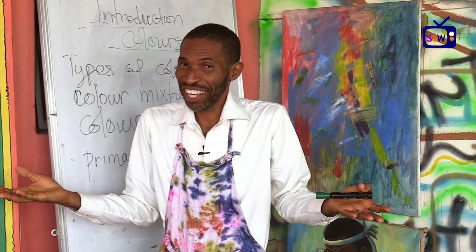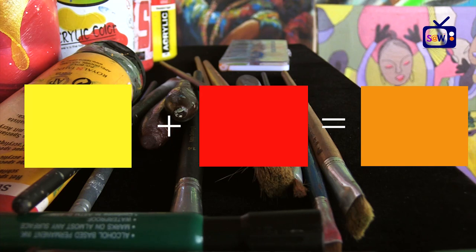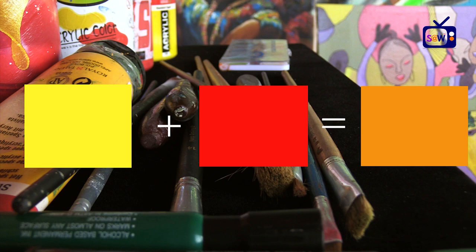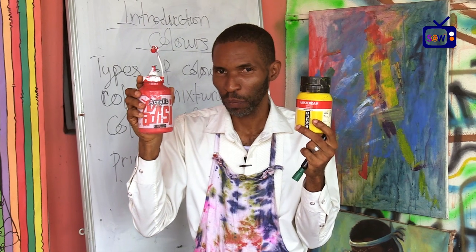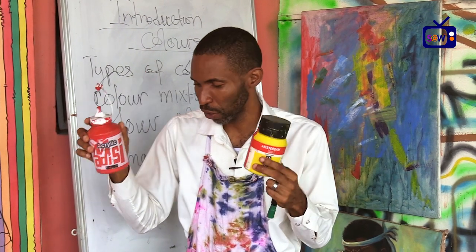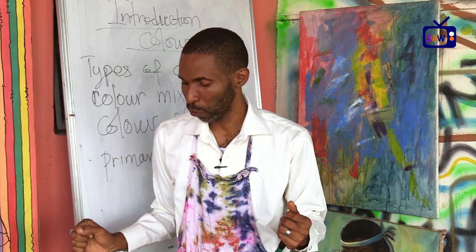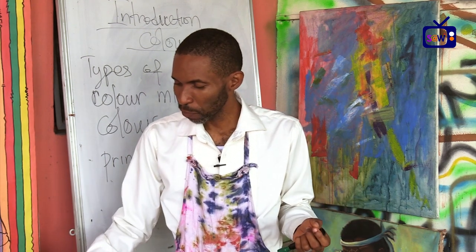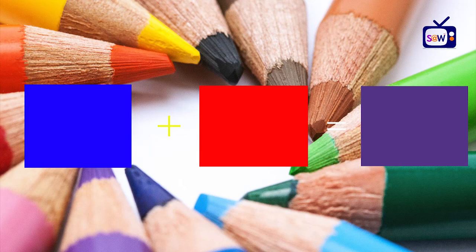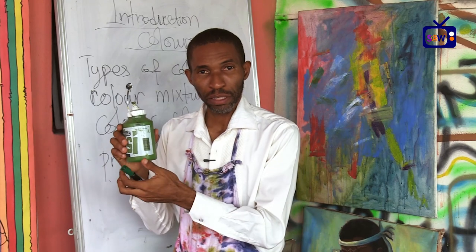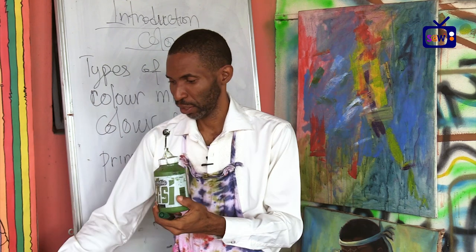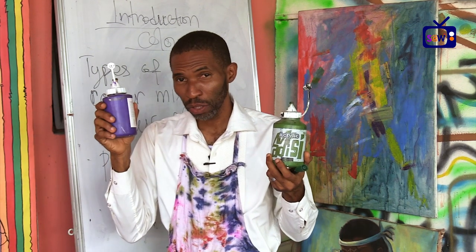The next secondary color is orange. To get orange, you take your yellow and your red — equal quantity — and it will give you orange. The third secondary color is purple. To get purple, you mix blue and red in equal quantity, which will give you purple. So green, orange, and purple are the secondary colors.